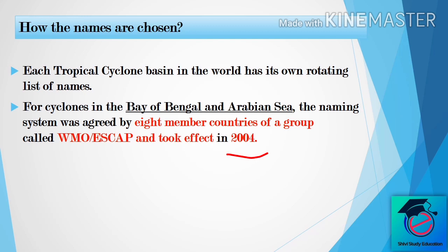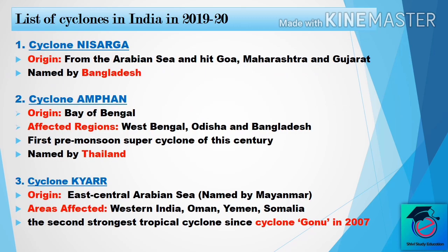This panel became effective in 2004. Now let's start with the list of cyclones in India which came between 2019 and 2020. The first one is Cyclone Nisarga. It was from the Arabian Sea and it hit Goa, Maharashtra, and Gujarat. The name Nisarga was suggested by Bangladesh.